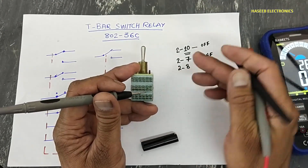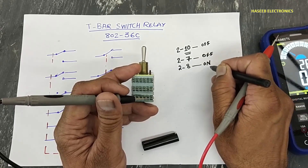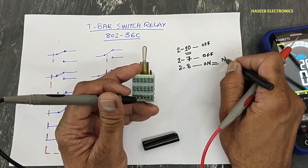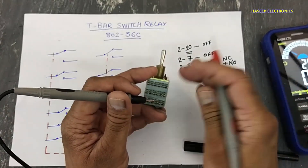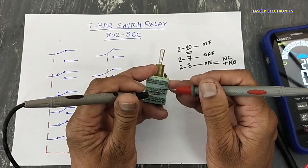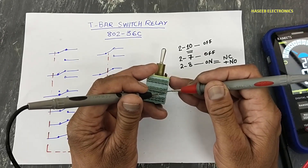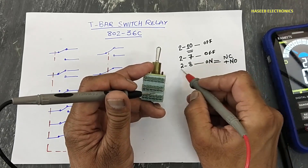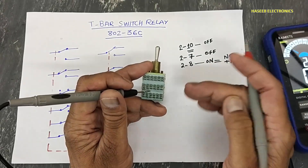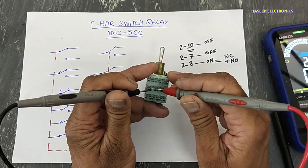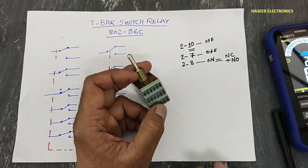Stage number 2, switch number 8 in ON condition is making connection with both points. Contact number 10 is working in ON condition. Contact number 7 is working in ON condition but it is making a problem for both directions. The other stages are good; we have a problem in these three contacts — how can we overcome this issue?